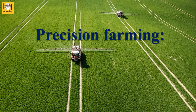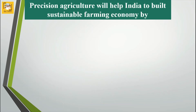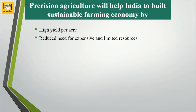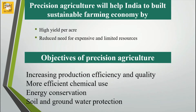What is precision farming? Precision farming is a concept that utilizes geographical information to determine field variability, to ensure optimal use of inputs and maximize the output from the farm. Precision farming helps the Indian farming community achieve sustainable farming economy through higher yield per acre and reduced need for expensive and limited resources, with the objective of increasing production efficiency and quality, more efficient use of chemicals, energy conservation, and most importantly, soil and groundwater conservation.